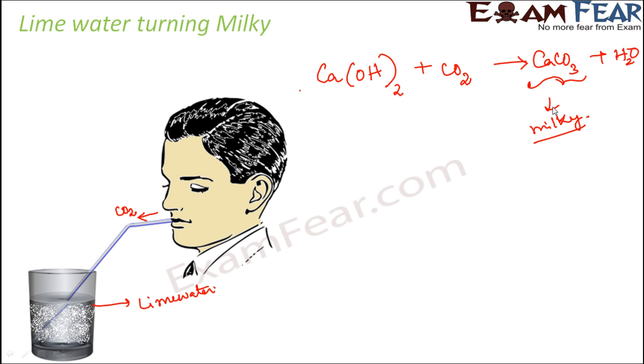Now somebody might say that okay we learned that during physical change the appearance or the color changes. So in this case also the color is changing from lime water to milky. So it should be a physical change. But whether it is a physical change or chemical change is determined by whether the chemical composition has changed or not. Now in this case the chemical composition has also changed and therefore it cannot be a physical change and it is a chemical change.